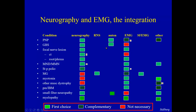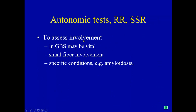Autonomic tests, when indicated, can be made, and in some cases are really important — for example, in Guillain-Barré and amyloidosis. What we do is RR interval variation and the sympathetic skin response.